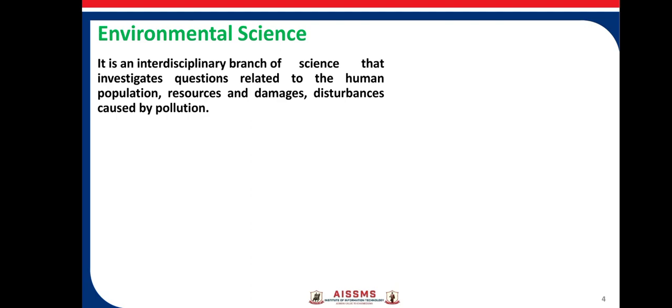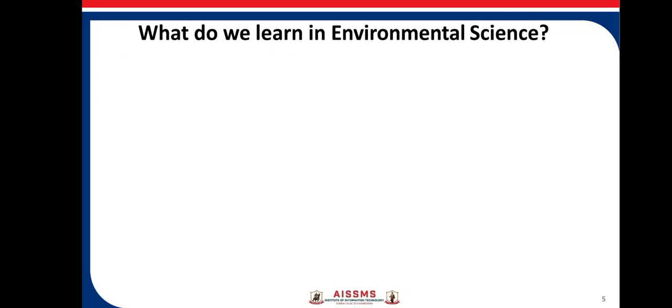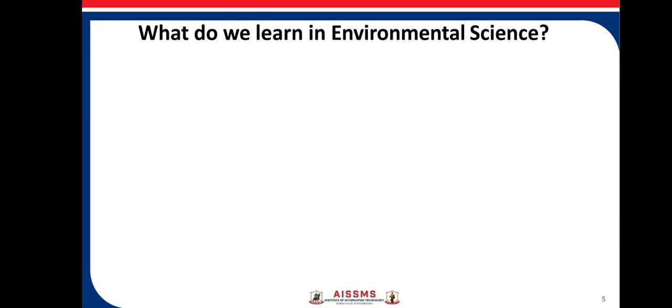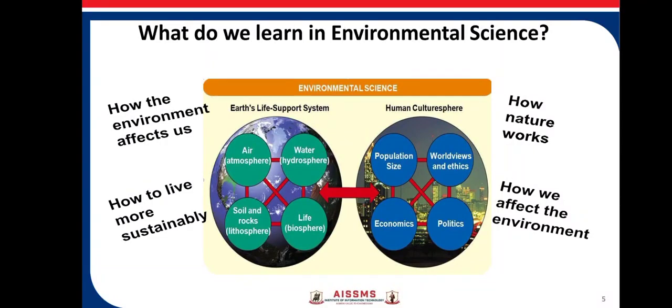What is environmental science? Environmental science is a multidisciplinary branch of science that investigates questions related to human population, resources, and damages and disturbances caused by this population. In environmental science, we learn how the environment affects us, how we affect the environment, how nature works, and how to live more sustainably.